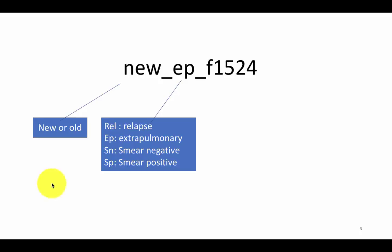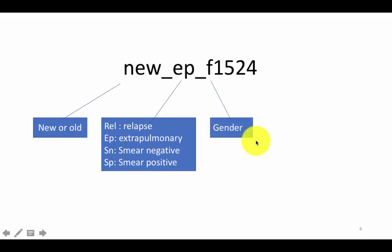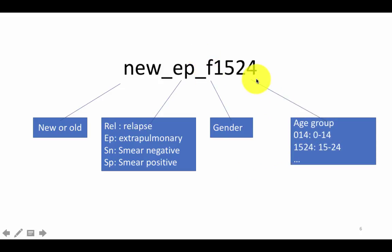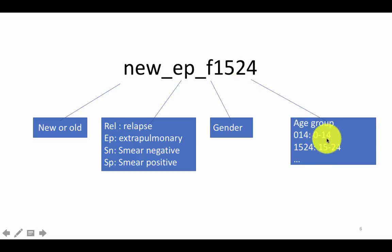The F or M part talks about the gender. And the final part tells you the age group to which these cases belong. So 1524 essentially means between the ages 15 and 24. The different values are: 014 for ages 0 to 14, 1524 for 15 to 24, and so on.